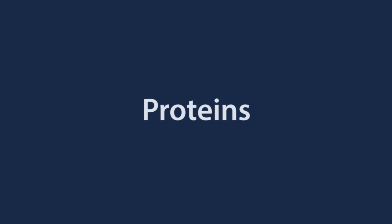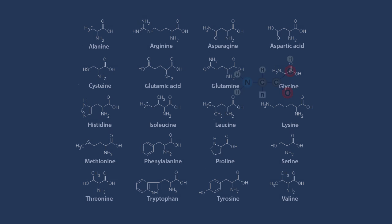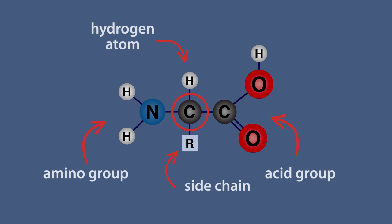Proteins are natural polymers made up of 20 different amino acids. Look at the central carbon atom. It has four different groups attached: the amino group, the acid group, a hydrogen atom, and a side chain R. There are 20 different groups of atoms for R. For example, hydrogen, methyl, alcohol, etc.